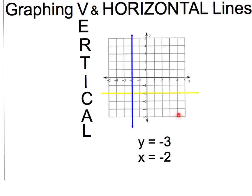This is a quick reminder too of what equations look like for vertical and horizontal lines. y equals negative 3 is a horizontal line. x equals negative 2 is a vertical line. So I'll walk you through two examples of how to graph an equation that is a vertical or a horizontal line.